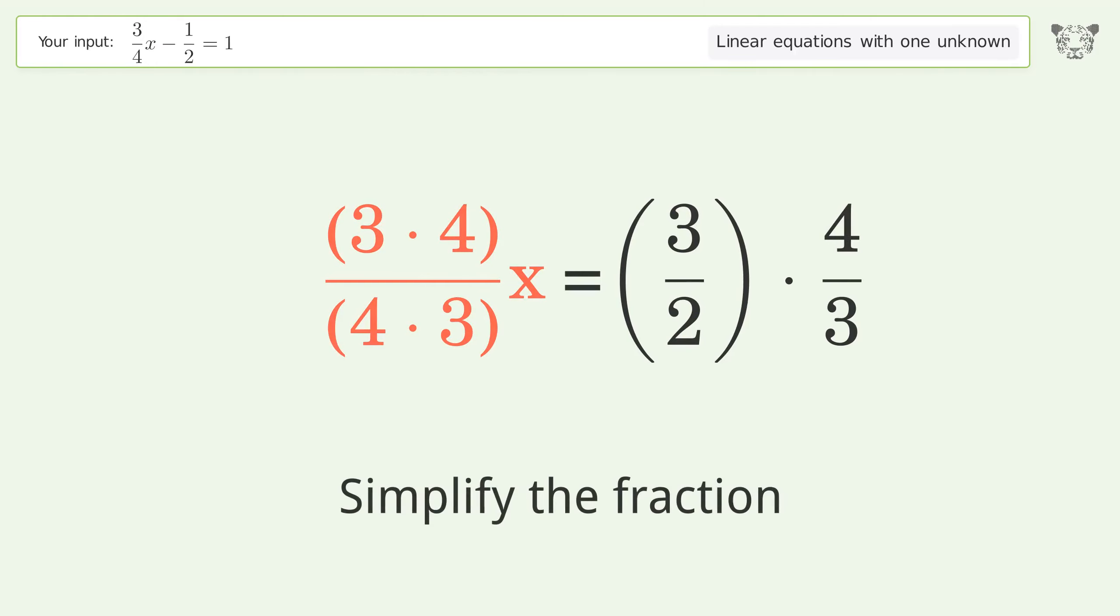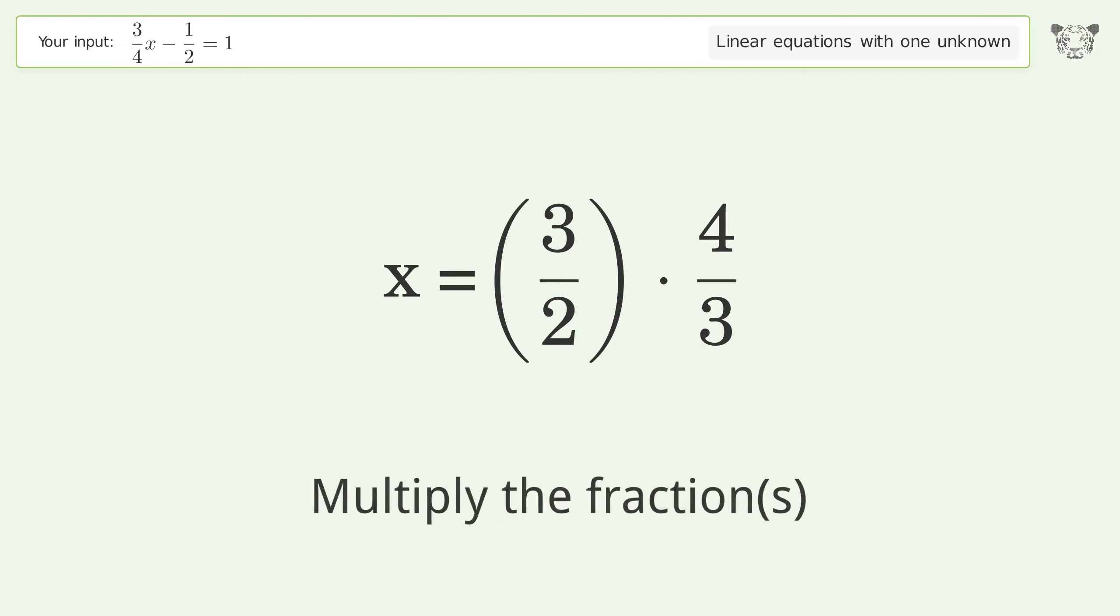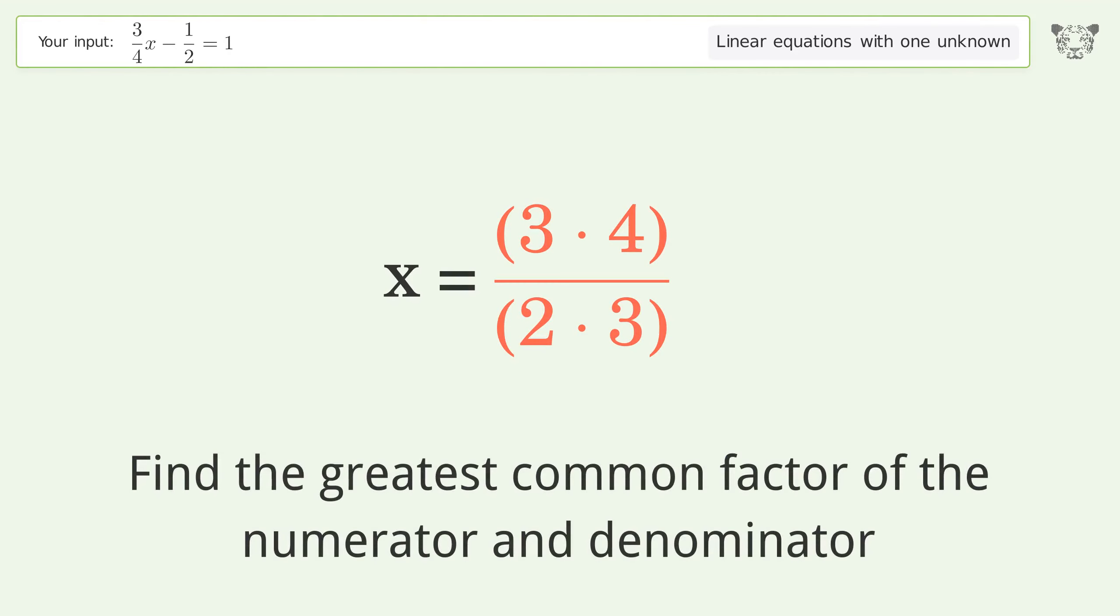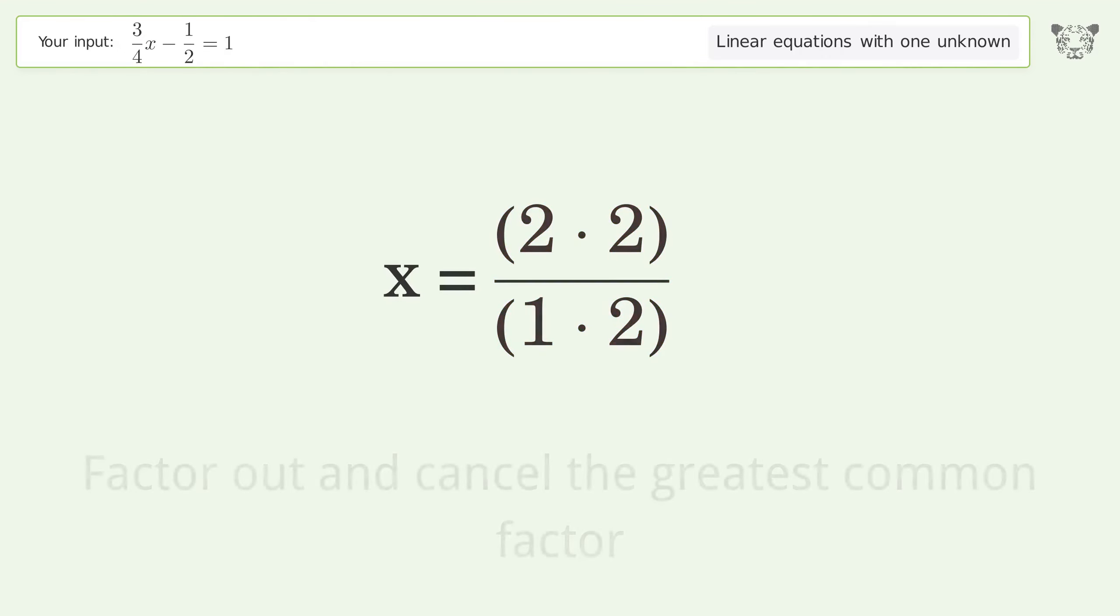Simplify the fraction. Multiply the fractions. Find the greatest common factor of the numerator and denominator. Factor out and cancel the greatest common factor.